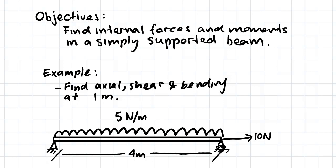So we're going to take one meter from the left side. What we have here is a simply supported beam that's being loaded with 5 newton per meter uniformly distributed load, and we also have a 10 newton force acting at the right side pulling outwards.